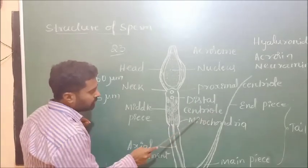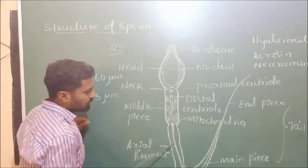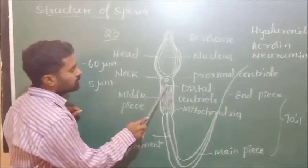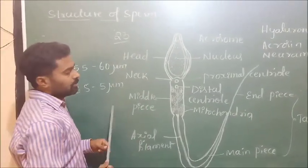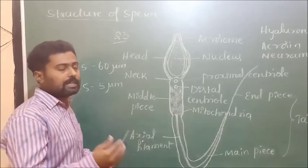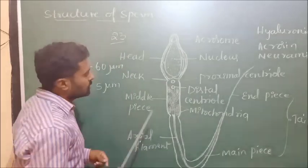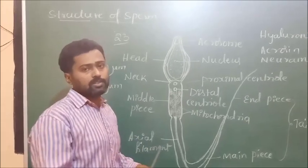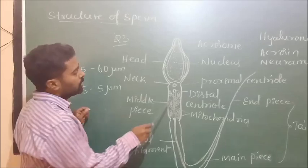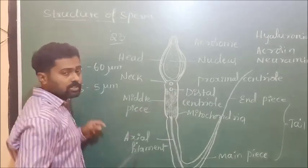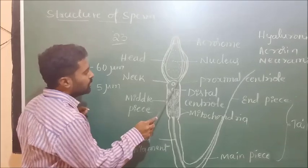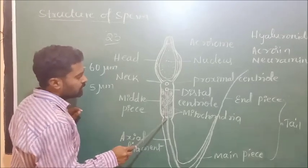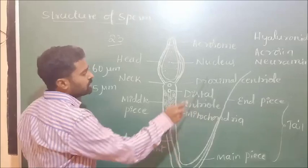The distal centriole, as you can observe in the diagram, continues as the axoneme and produces the tail part of the sperm. There are two centrioles in the sperm — the proximal centriole and the distal centriole. Centrioles are structures that help in separation of chromosomes, found mainly in animal cells, and are formed from microtubules. The proximal centriole lies in the concavity of the head, whereas the distal centriole continues as the axial filament, forming the tail of the sperm.